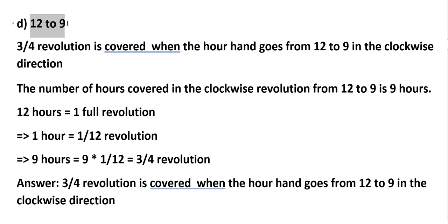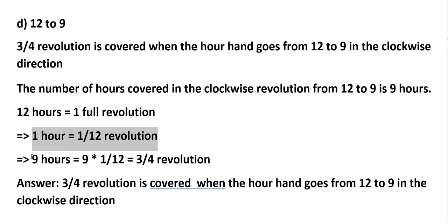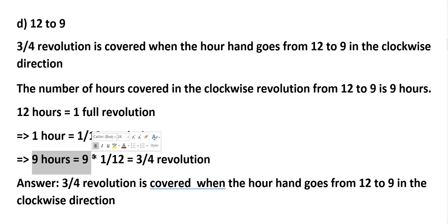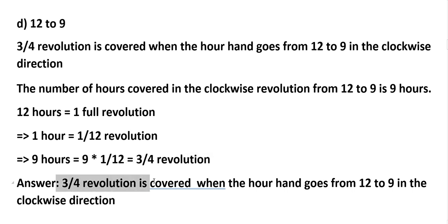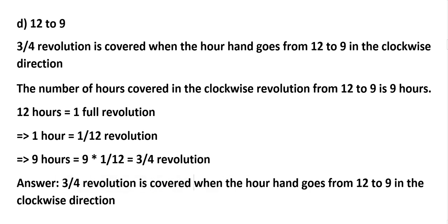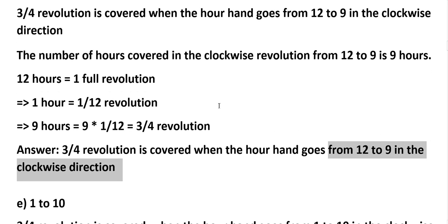D: 12 to 9. Three-fourths revolution is covered when the hour hand goes from 12 to 9 in the clockwise direction. 1 hour equals 1/12 revolution, so 9 hours means 9 × 1/12, that equals 3/4 revolution. Answer: 3/4 revolution is covered when the hour hand goes from 12 to 9 in the clockwise direction. 12 to 9 means 9 hours.